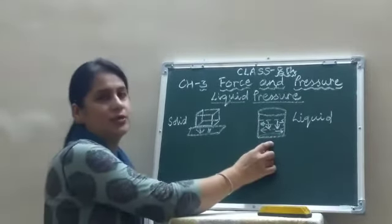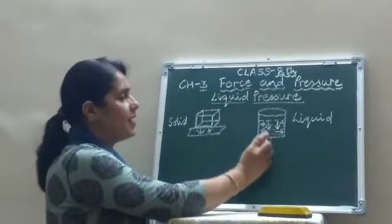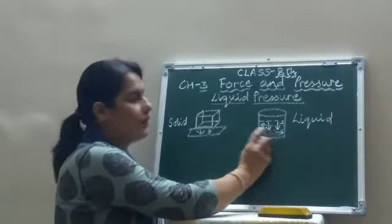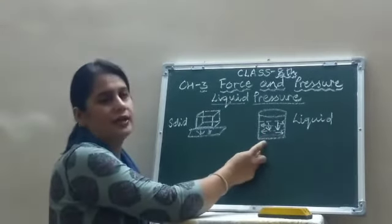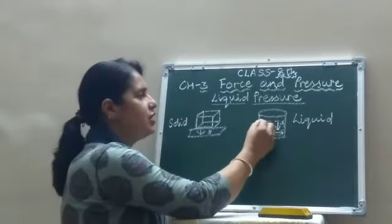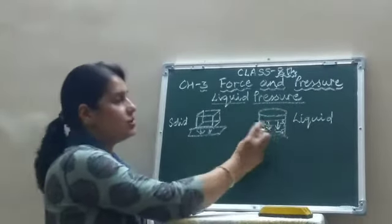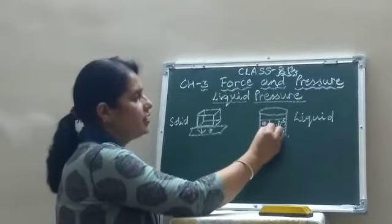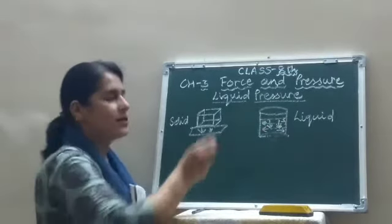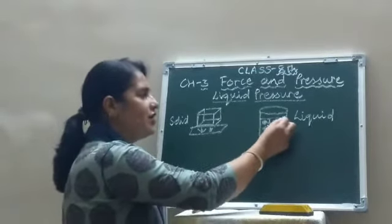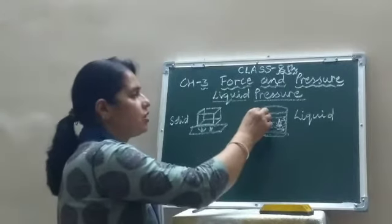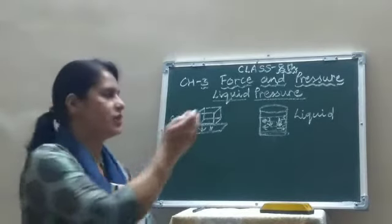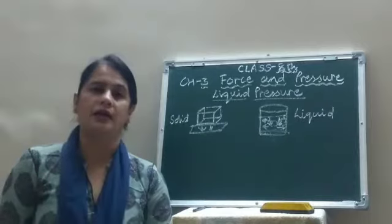But in the case of liquids, they also have weight but they exert pressure sideways as well on the container in which they are kept. A liquid exerts pressure equal to its weight in the downward direction, plus pressure on the walls of the container sideways. This is the key difference between pressure exerted by a solid and by a liquid.